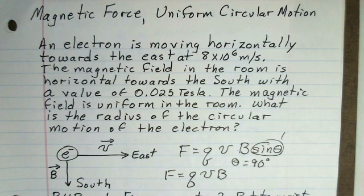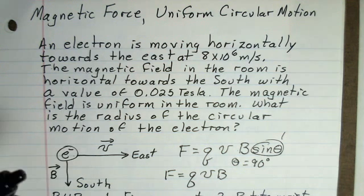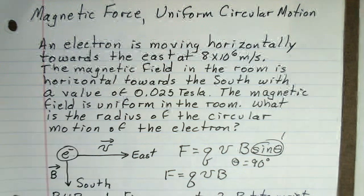The right-hand rule gives you the direction of force using your thumb for a positive charge. When the charge is negative, you have to reverse the direction of your force. So this electron is going to lift up out of the page as it starts off towards the east.